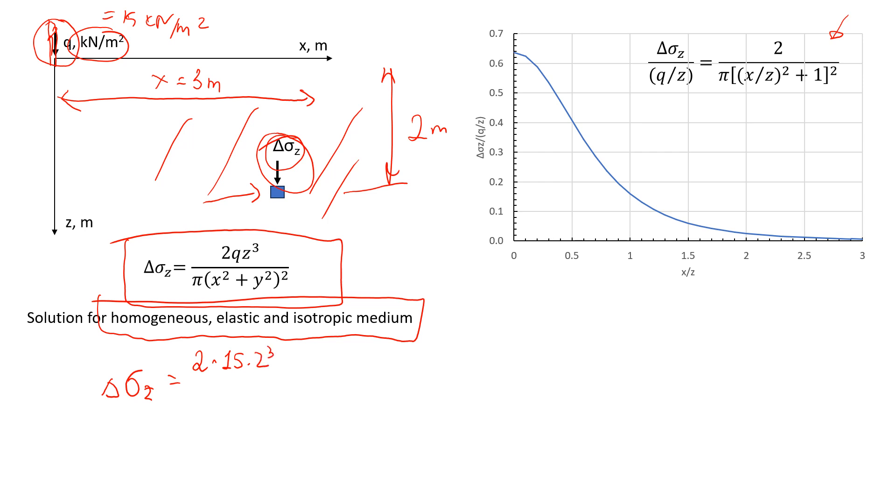This is divided by π times (x² + z²)², where x is 3 meters. So the formula becomes 2q·z³ divided by π(x² + z²)². According to my calculations, it should be 0.45 kilonewtons per square meter.